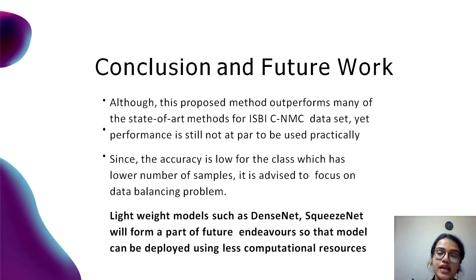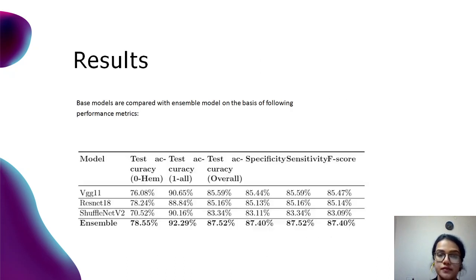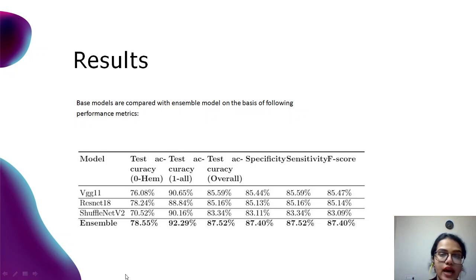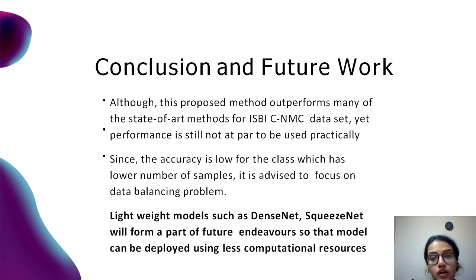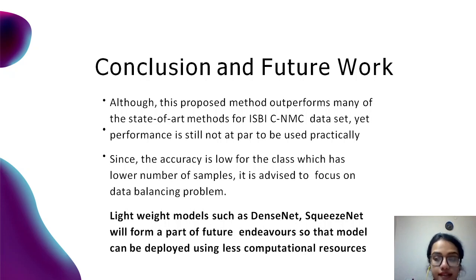It is advised to focus on the data balancing problem: the overall accuracy is high because the majority of samples belonged to one class, while another category had fewer samples. Future work will focus on data balancing and on lightweight models such as DenseNet and SqueezeNet, so the model can be deployed using less computational resources and in mobile-based applications. Thank you so much.